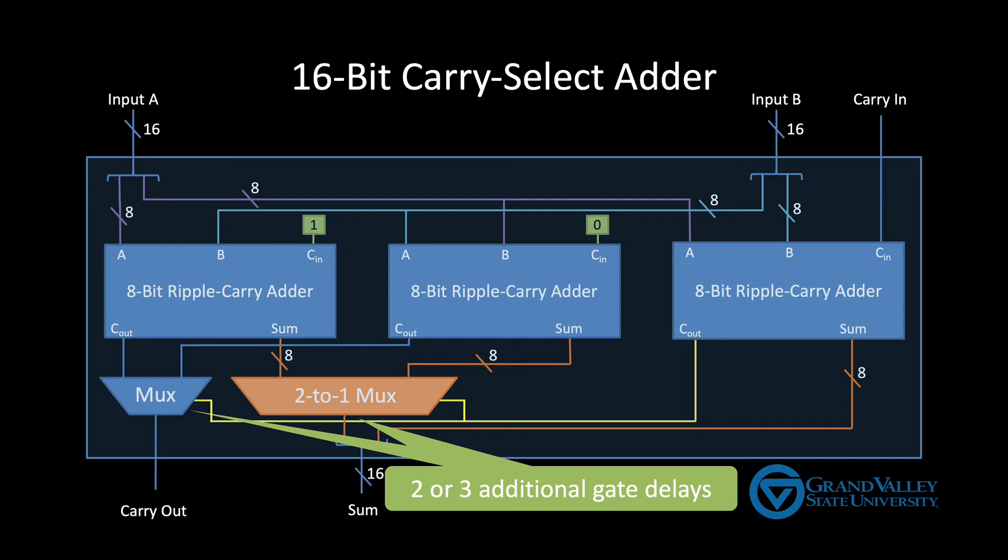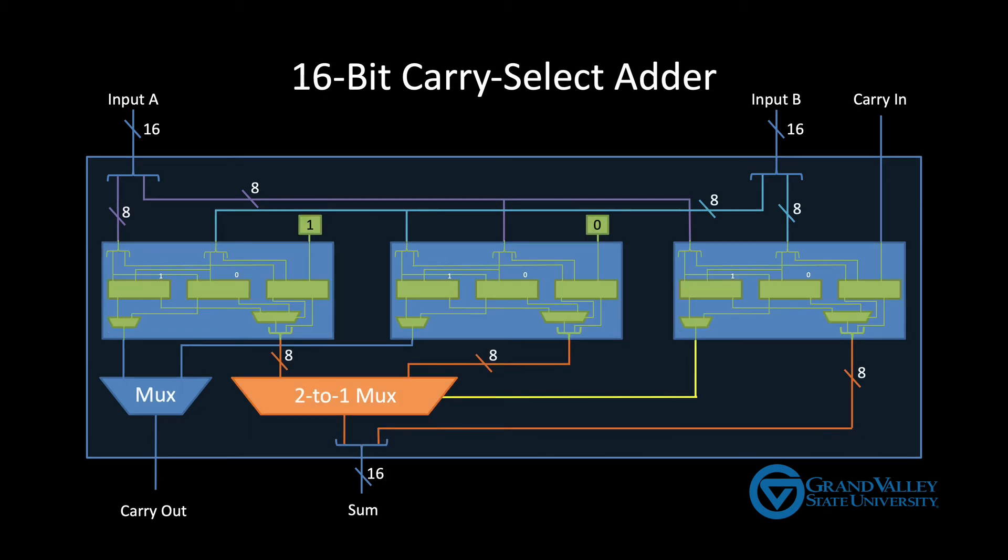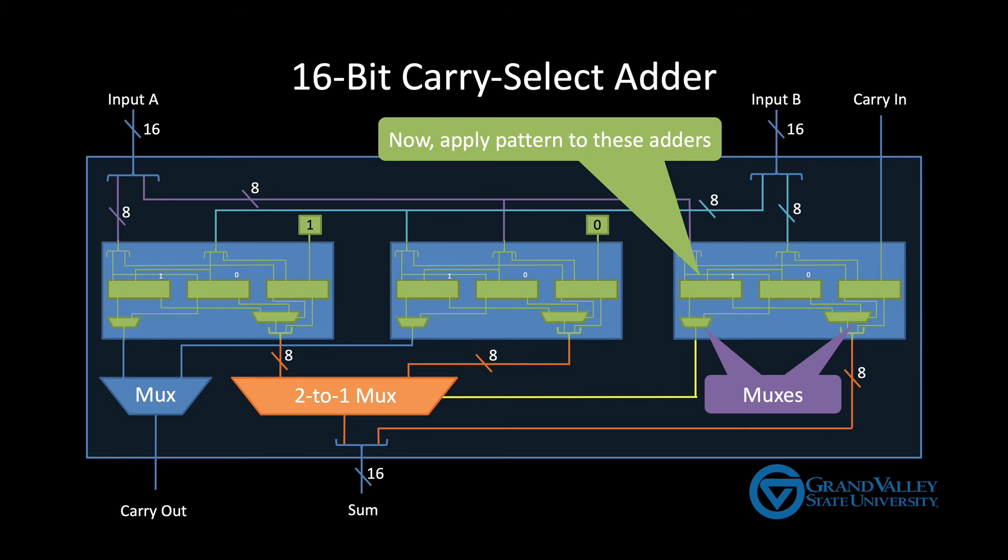So now what would happen if we replace the inner eight-bit ripple carry adders with adders built using the same pattern? And by that I mean we take those eight-bit ripple carry adders and make them out of three four-bit adders and a couple of MUX is at the bottom. Well making that substitution would cut the time in half again. So if we kept going and again applied the pattern to the four-bit ripple carry adders we cut the time in half one more time.